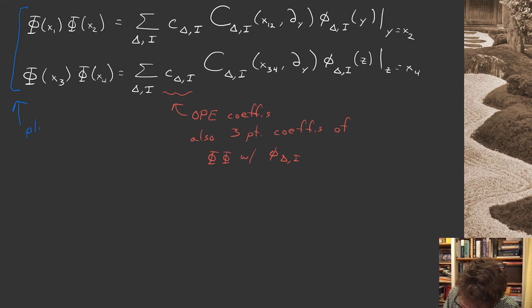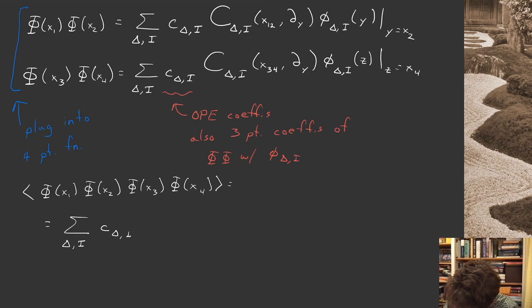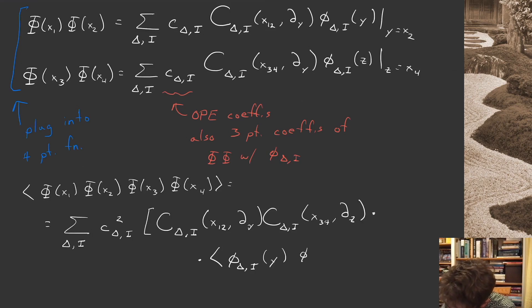What I'm going to do is take these two expressions and plug them into the four-point function and see what happens. So my four-point function, phi of x1, phi of x2, phi of x3, phi of x4, must be a sum on delta i, c delta i squared, these capital C functions, x12 partial y, c delta i x34 partial z, acting on the two-point function phi delta i at y, phi delta i at z, where y equals x2 and z equals x4.